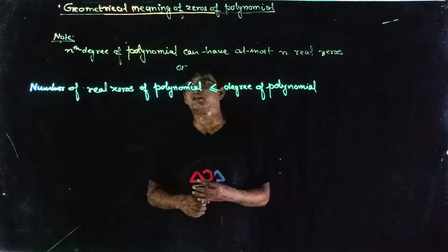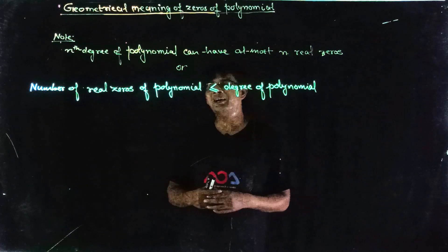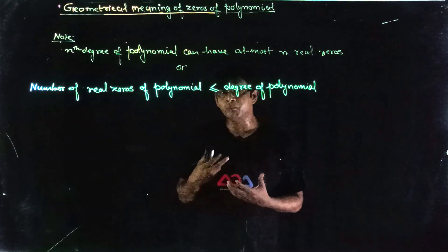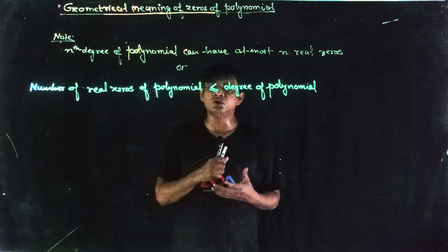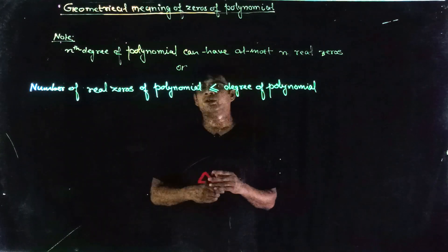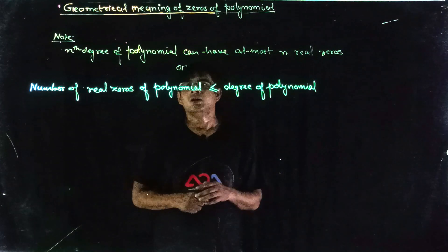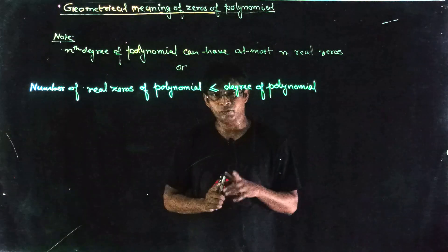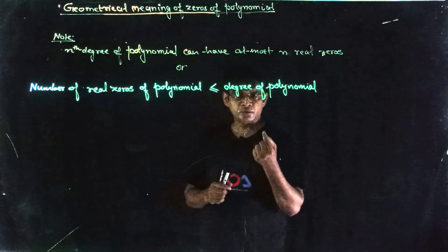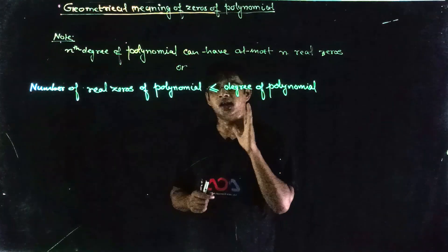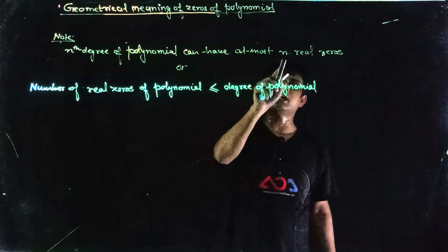Hello students. In this lecture we discuss the geometrical meaning of zeros of polynomials. Before discussion, first we will understand what can be the maximum number of zeros and what can be the maximum number of real zeros. Suppose we have a polynomial of degree n, so the maximum number of zeros will be n. The real number of zeros will be n or less — an nth degree polynomial can have at most n real zeros.